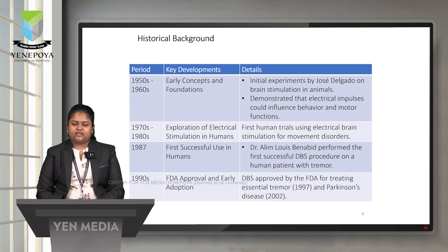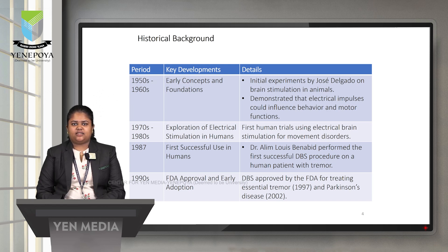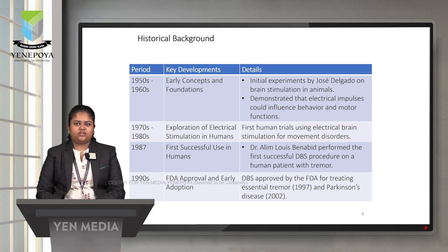Recalling the historical background: from the 1950s, the early concepts and foundations began, with initial experiments on brain stimulation in animals, where electrical impulses and their influence on behaviour and motor functions were studied. In the 1970s and 1980s, exploration of electrical stimulation in humans was done, with the first human trials using electrical brain stimulation for movement disorders. In 1987, Dr. Alim Louis Benabid performed the first successful deep brain stimulation procedure on a human patient with tremor.